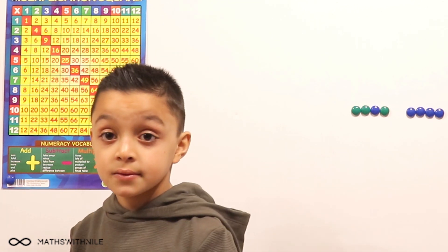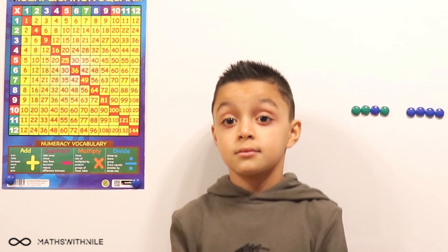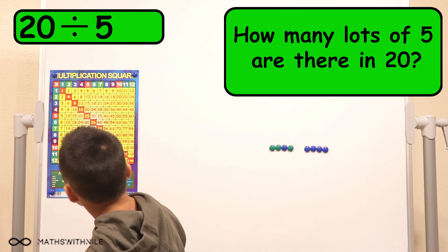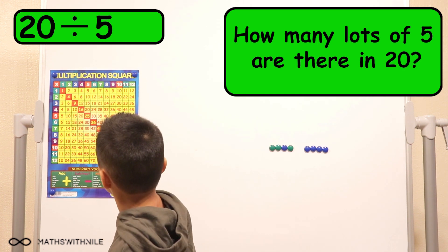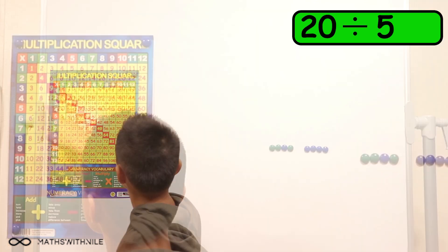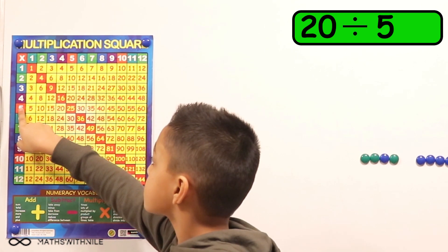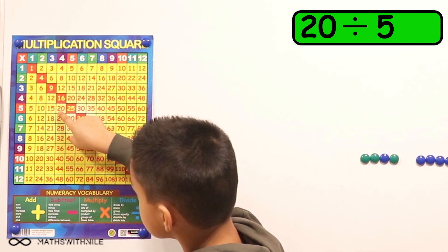So if I wanted, stand to the side a bit. If I wanted to ask a question, 20 divided by five, how would you use the grid to show us? Use your fingers. 20 divided by five. First they have to find 20. So find the five. That's it. Stand to the side so we can see what you're doing. And you go across and you find the 20. That's it.